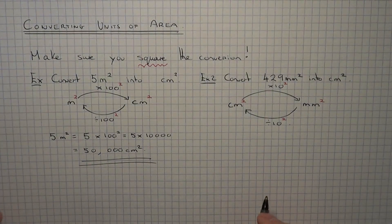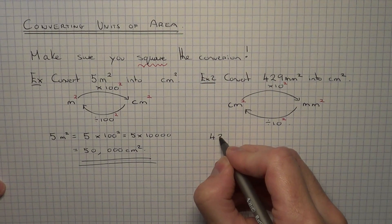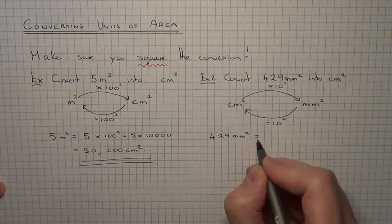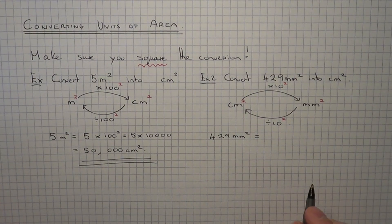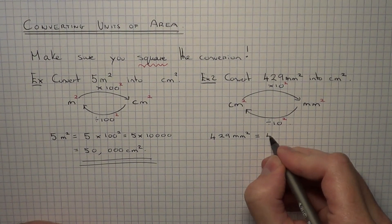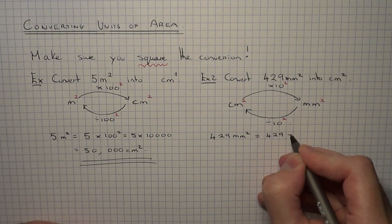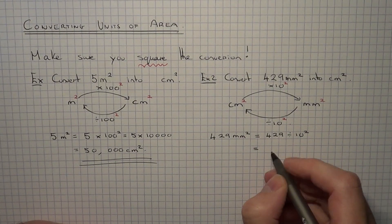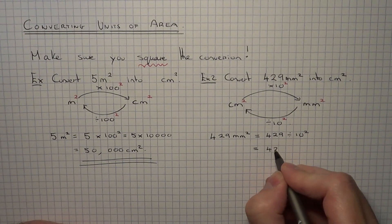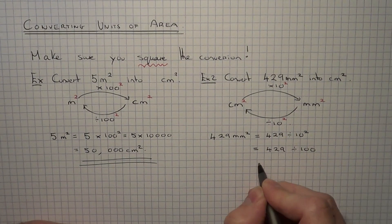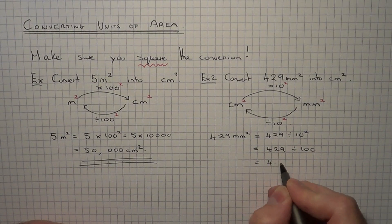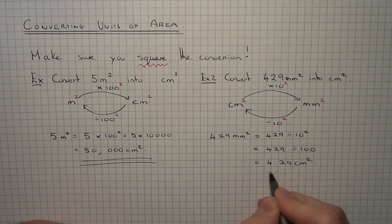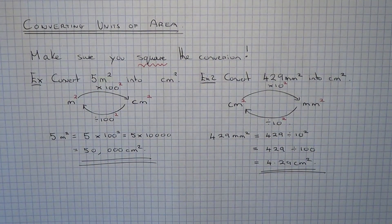So let's complete the example. We've got 429 millimetres squared. From millimetres squared to centimetres squared, we divide by 10 squared. 10 squared is 10 times 10, which is 100. And 429 divided by 100 would be 4.29 centimetres squared. Thanks for watching this video.